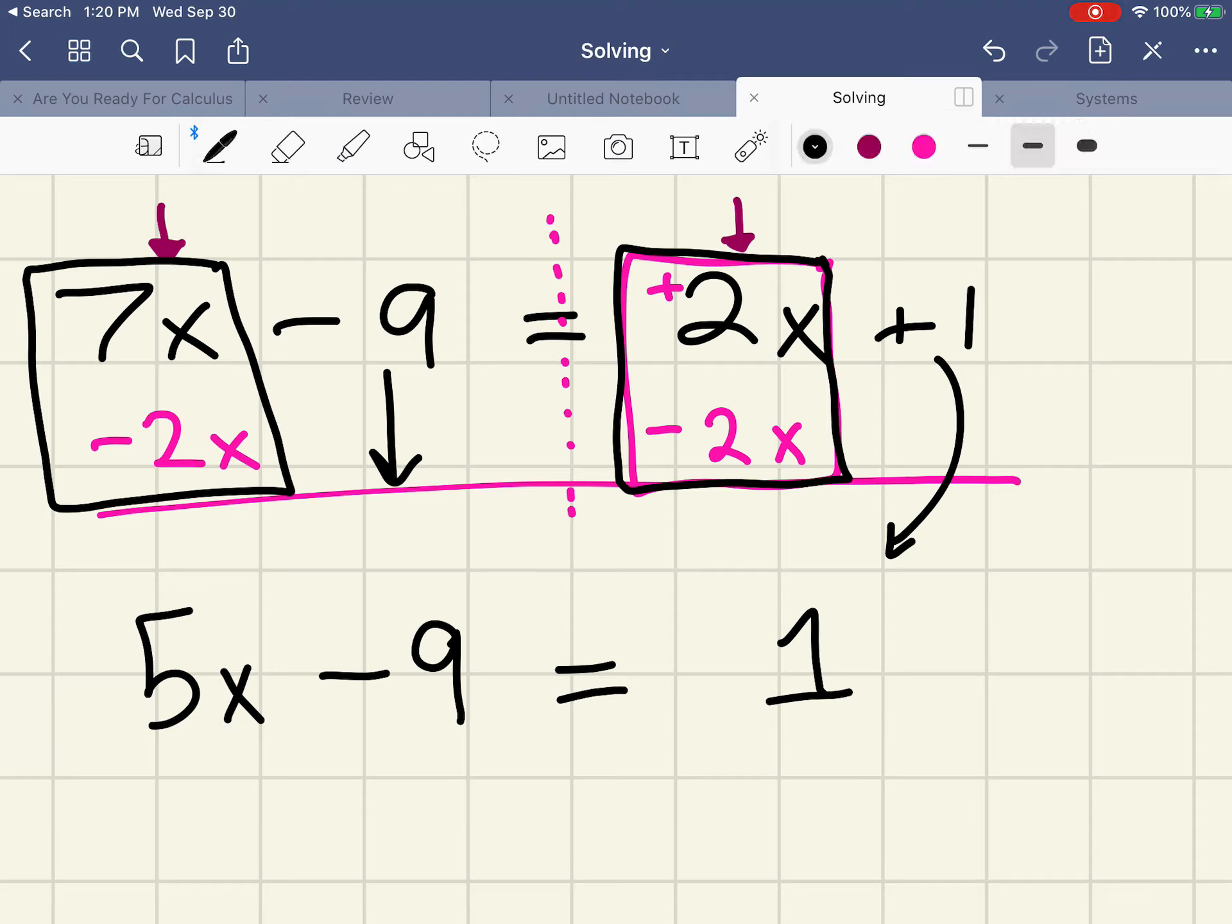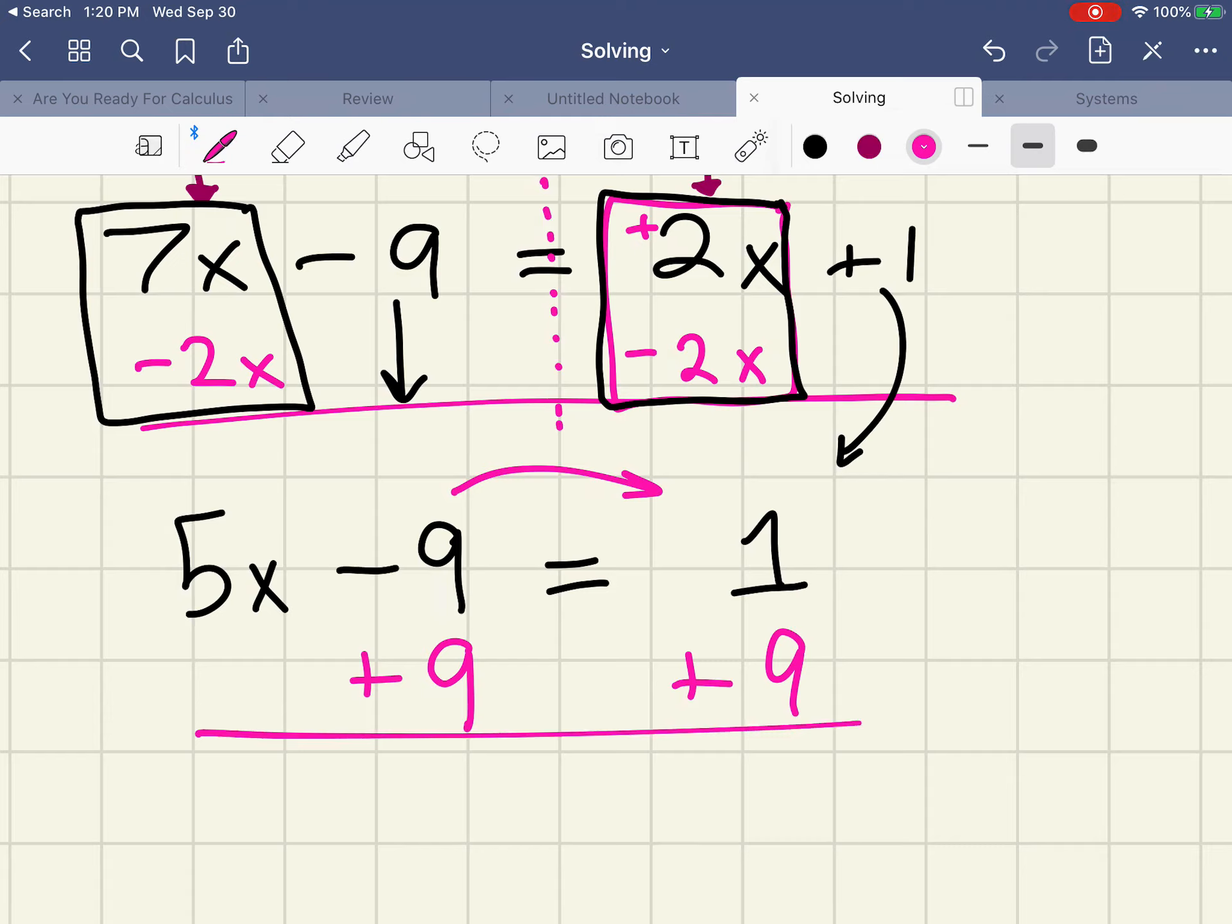Now I have a two-step equation. I want to get rid of that 9, it needs to go with the 1. In order to cancel that from this side, I need to add 9. If I add that to one side, I have to add it to the other. The 5x drops down, the 9s cancel out, drop down my equal sign. 1 plus 9 is 10.